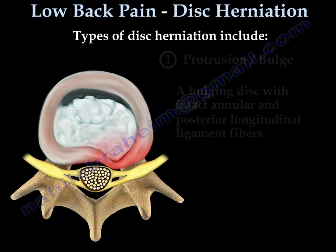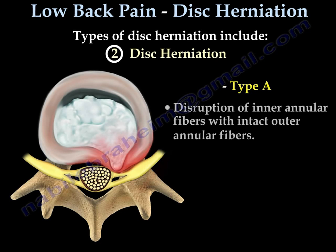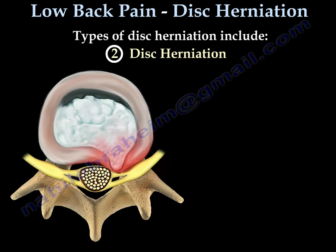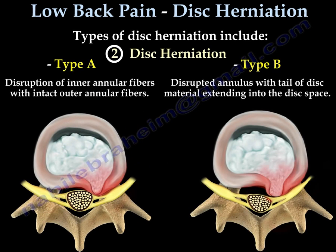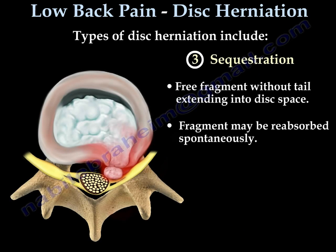The second type is disc herniation. In this type, we have disruption of the annular fibers, either partially or totally, with a tail of disc material extending into the disc space. The third type is called a sequestered disc — a free fragment without a tail extending into the disc space.